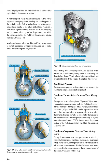The two-stroke process begins with the fuel entering the engine and concludes as it exits as exhaust. Crankcase vacuum intake stroke: the upward stroke of the piston creates a vacuum in the crankcase and pulls the fuel/air/oil mixture into the crankcase through the intake valve system from the carburetor. This can be a pressure-actuated reed valve, a rotary valve, or a ported inlet system where the lower piston skirt provides an opening for the fuel/air/oil mixture to flow. When the piston is reaching top dead center (TDC), the greatest portion of the fuel/oil/air mixture has filled the crankcase.